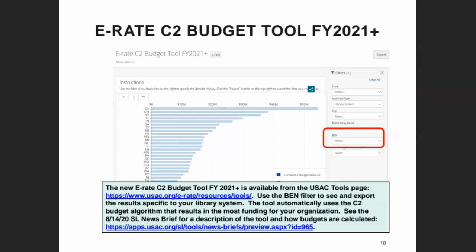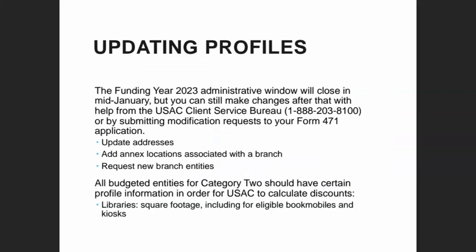There is a Category 2 budget tool on USAC's website where you can enter the system's billed entity number for your library, and it will show the overall amount of funding, the portion available, and the portion already committed during the current budget period. It can be tricky to use and is based on information in your library's profile in the E-Rate Productivity Center — if the square footage hasn't been updated, what you see won't be correct. This is a good time to make those updates, as we're currently in the administrative window when you can make changes to your profile.